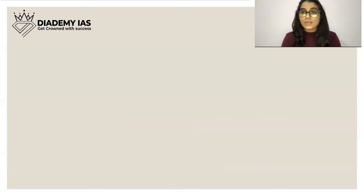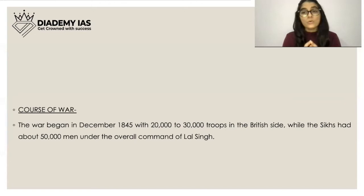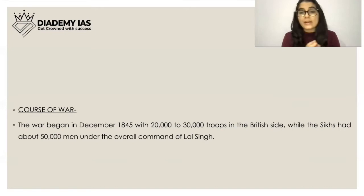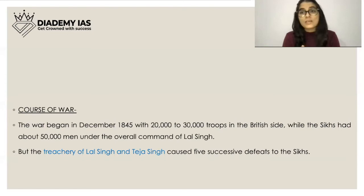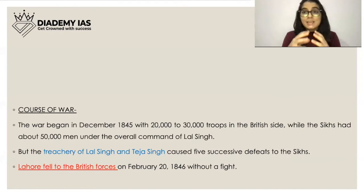The war began in December 1845. The British had 20,000 to 30,000 troops while the Sikhs had about 50,000 men under the overall command of Lal Singh. Despite the Sikh numerical advantage, Lal Singh and Teja Singh turned out to be traitors — they went against the Sikh side and favored the English, so the British easily won this battle, essentially without a real fight.